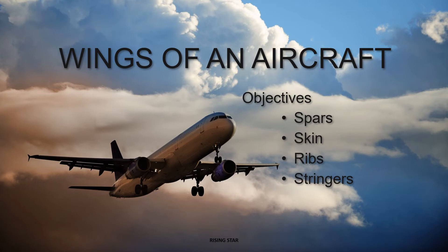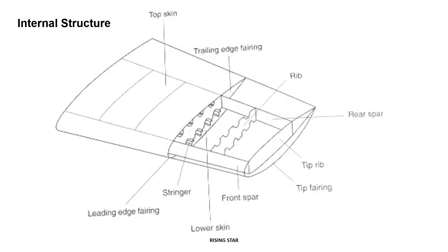Hello viewers, welcome back to Rising Star. In the last video we discussed about the flight control surfaces. Today we are going to learn about the wings of an aircraft. Our main objective will be to focus on the skin of the aircraft, the spar, the ribs and the stringers of an aircraft.